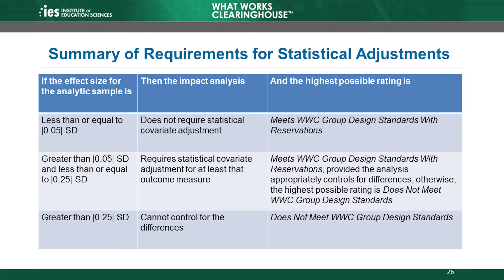Now that we have covered a few special issues related to calculating baseline equivalence, let's turn to statistical adjustments and the role they play in the baseline equivalence standard. Upon determining that a study is an RCT with high attrition, a compromised random assignment, or a QED, the WWC assesses baseline equivalence. Recall from earlier in the module that the effect size determines whether a study's impact analysis requires a statistical adjustment for a covariate. Let's summarize the requirements for statistical covariate adjustments.